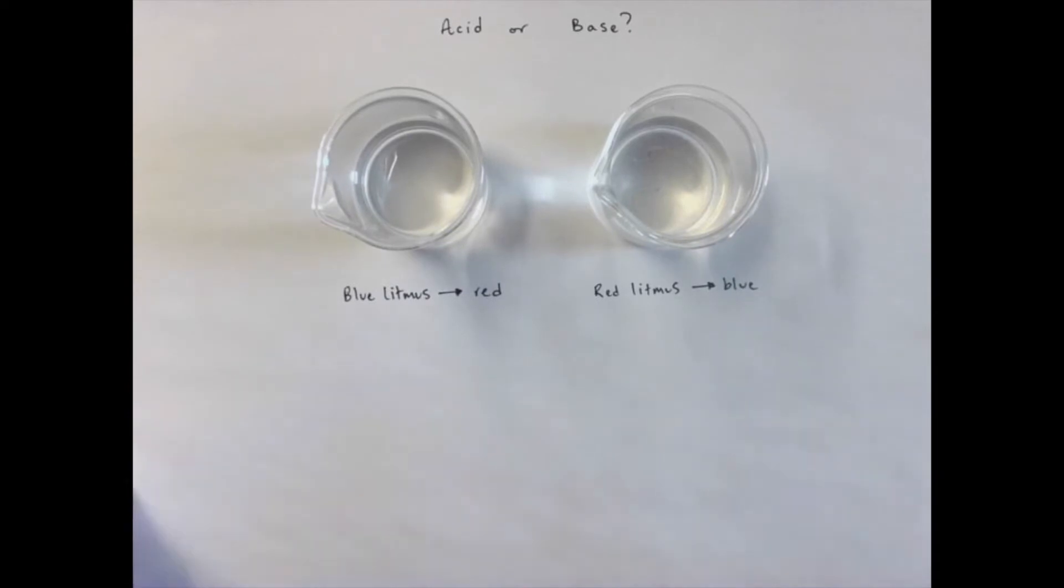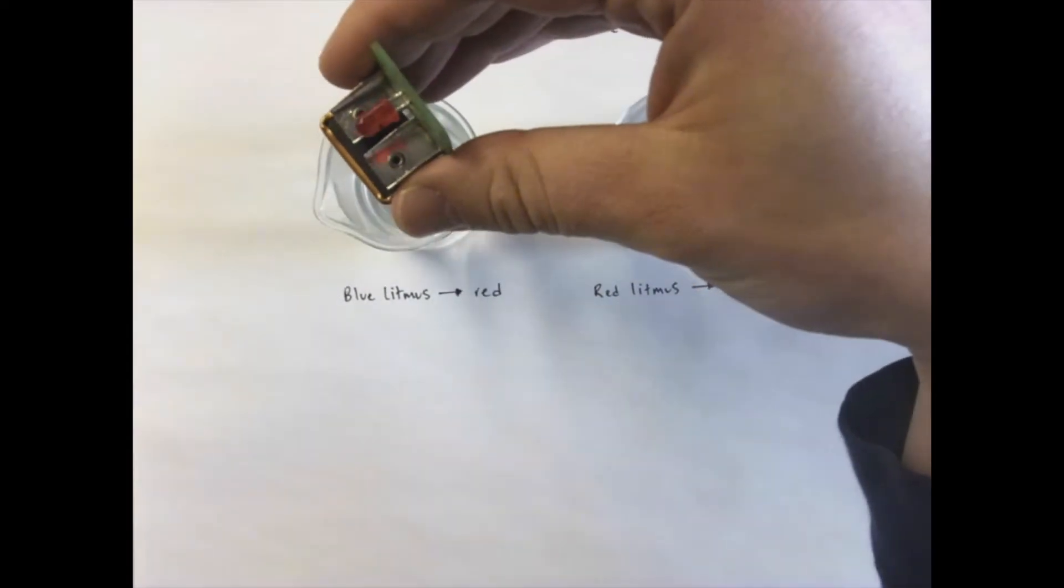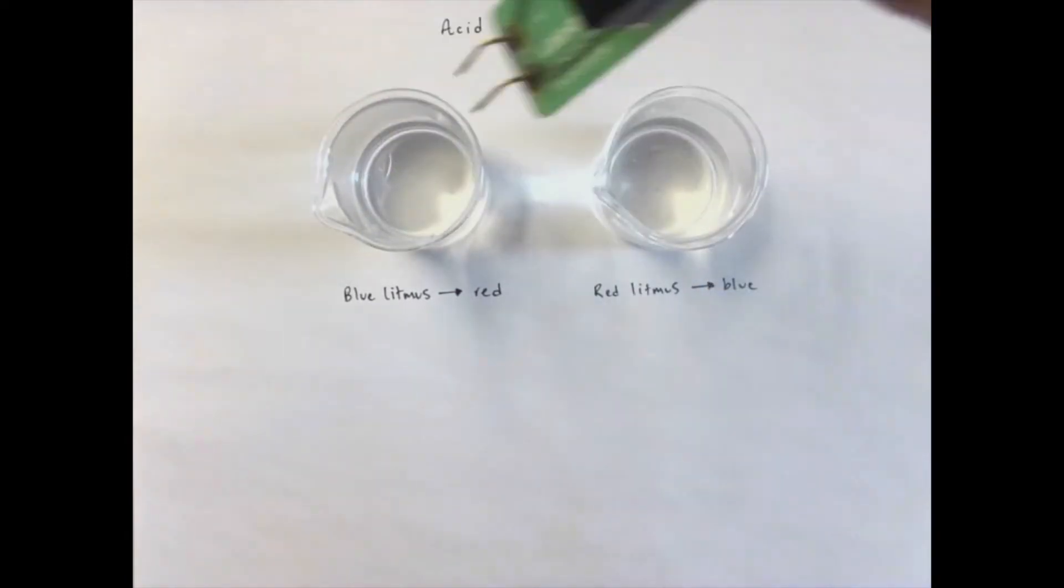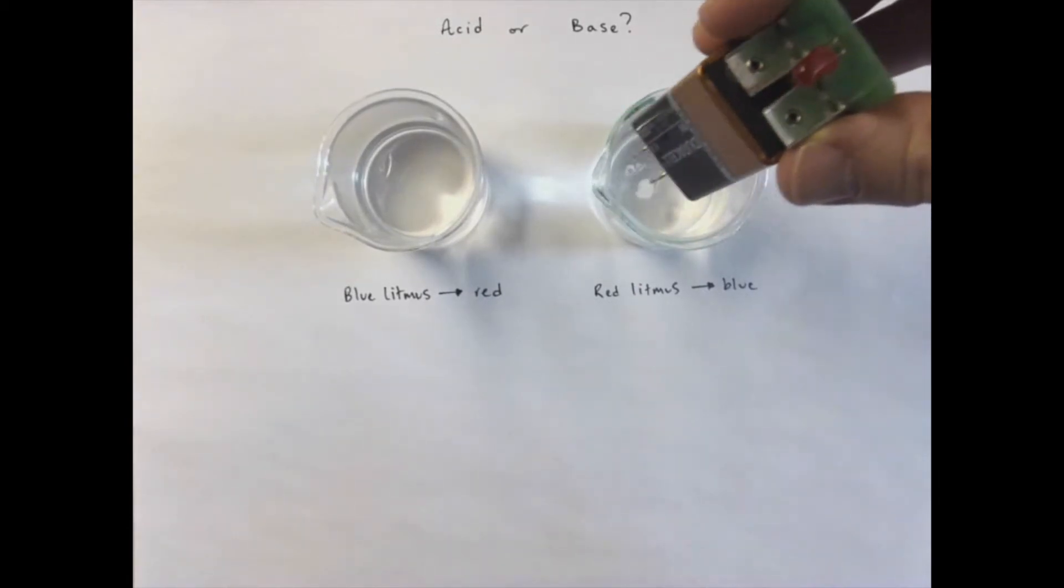Okay, so there's one test that we can do. And we also know that we can do some other tests for acids and bases. One of the things that acids and bases have in common is that they can conduct electricity. So this particular solution can conduct electricity, and this one can also conduct electricity.